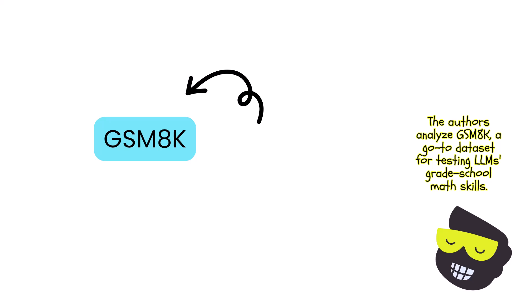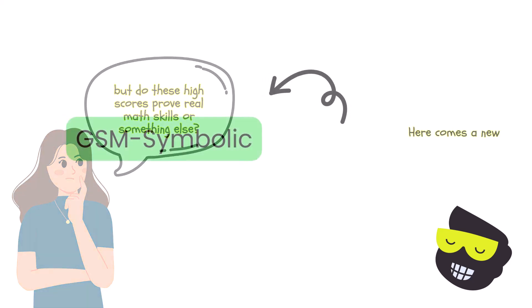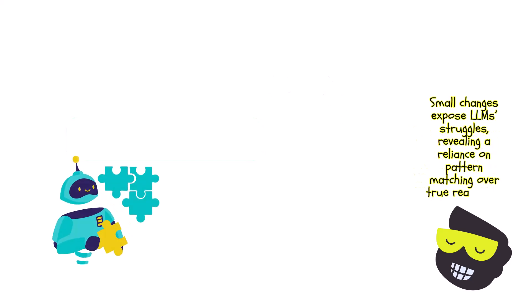Many LLMs boast impressive accuracy here. The big question is, are these reported high scores really telling us that LLMs are great at math, or is something else at play? This is where GSM-Symbolic comes in. This is a new template-based way of creating math questions that are variations of the original GSM-8K problems. By varying numbers, names, and complexity of each question, the authors find that large language models can stumble, and this suggests that many LLMs are less about reasoning and more about pattern matching.